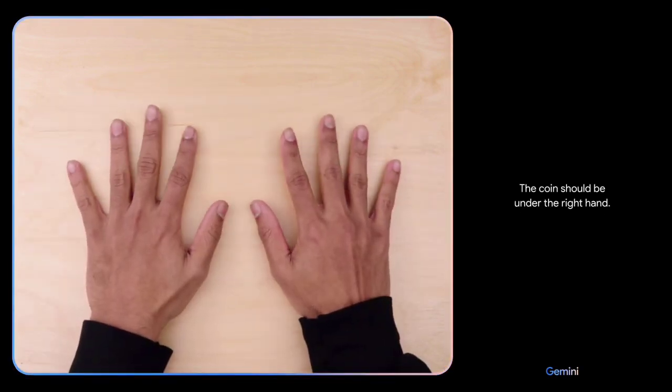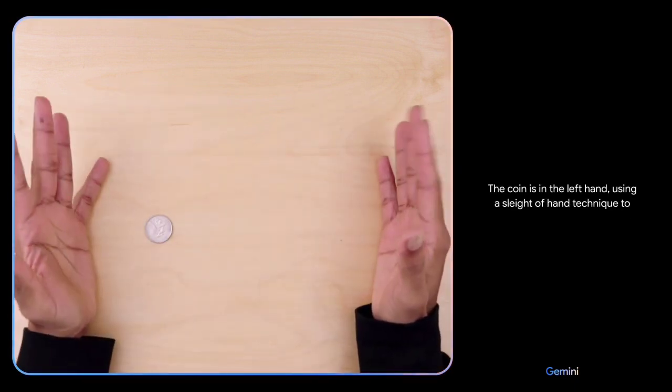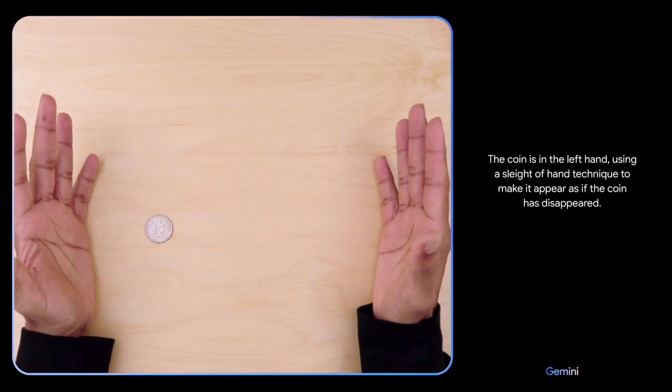The coin should be under the right hand. Hmm. I don't know. The coin is in the left hand using a sleight of hand technique to make it appear as if the coin has disappeared.